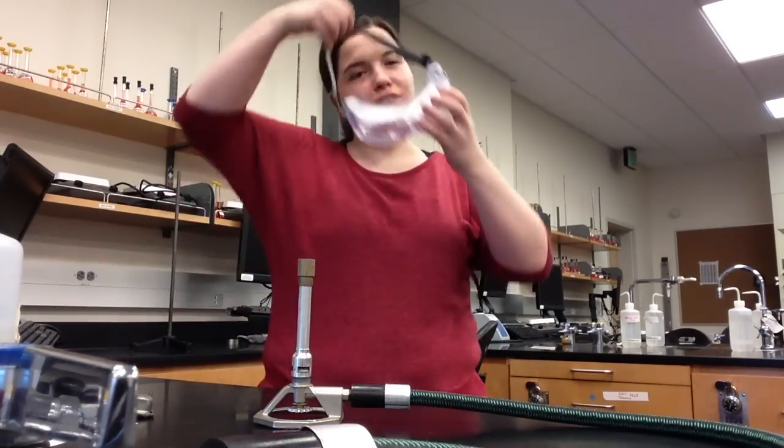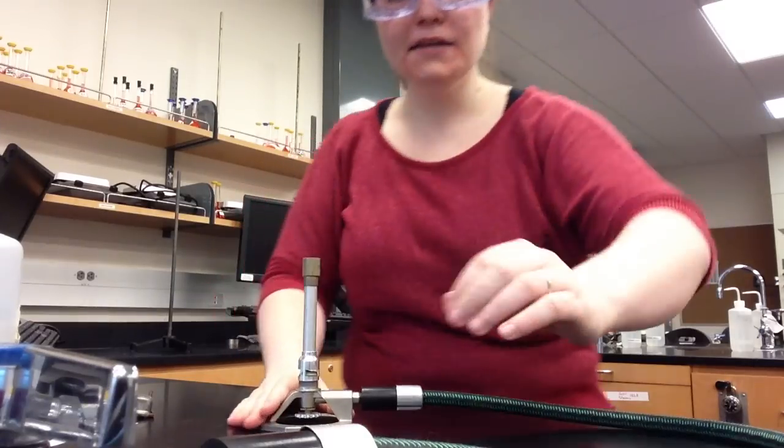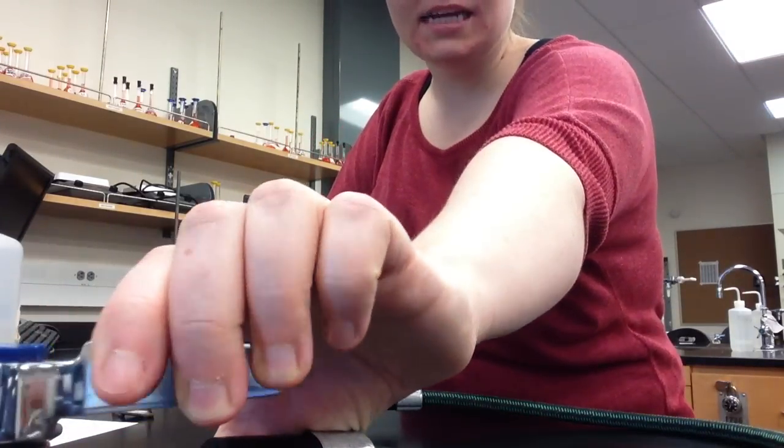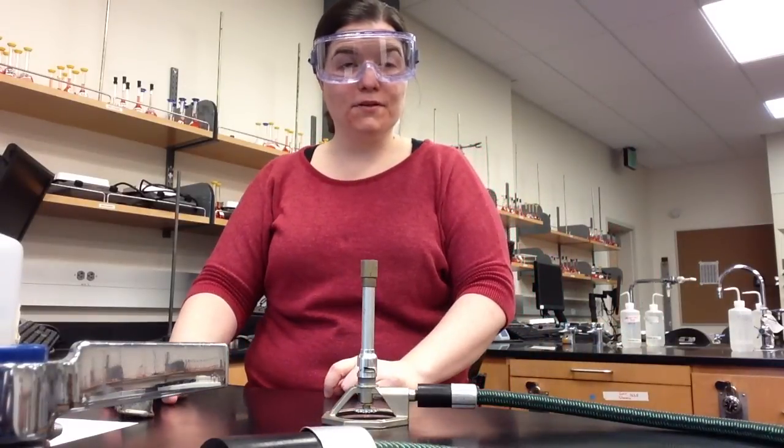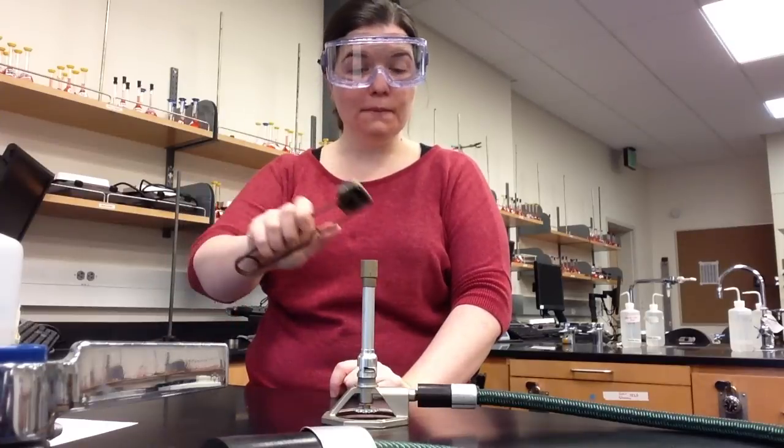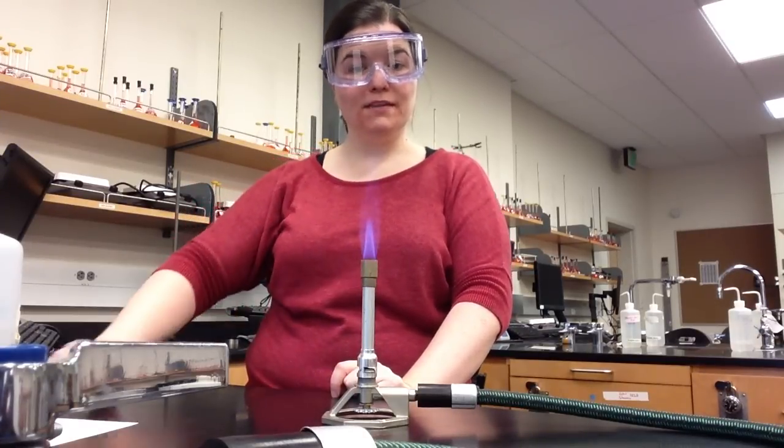I'm now going to put on my safety goggles to protect my eyes. I'm going to turn the handle of the gas valve until it is on top of the valve. When I do, I can hear gas coming out of the Bunsen burner and I can smell a little bit of it. I'm going to squeeze the striker on top of the Bunsen burner to ignite the flame.